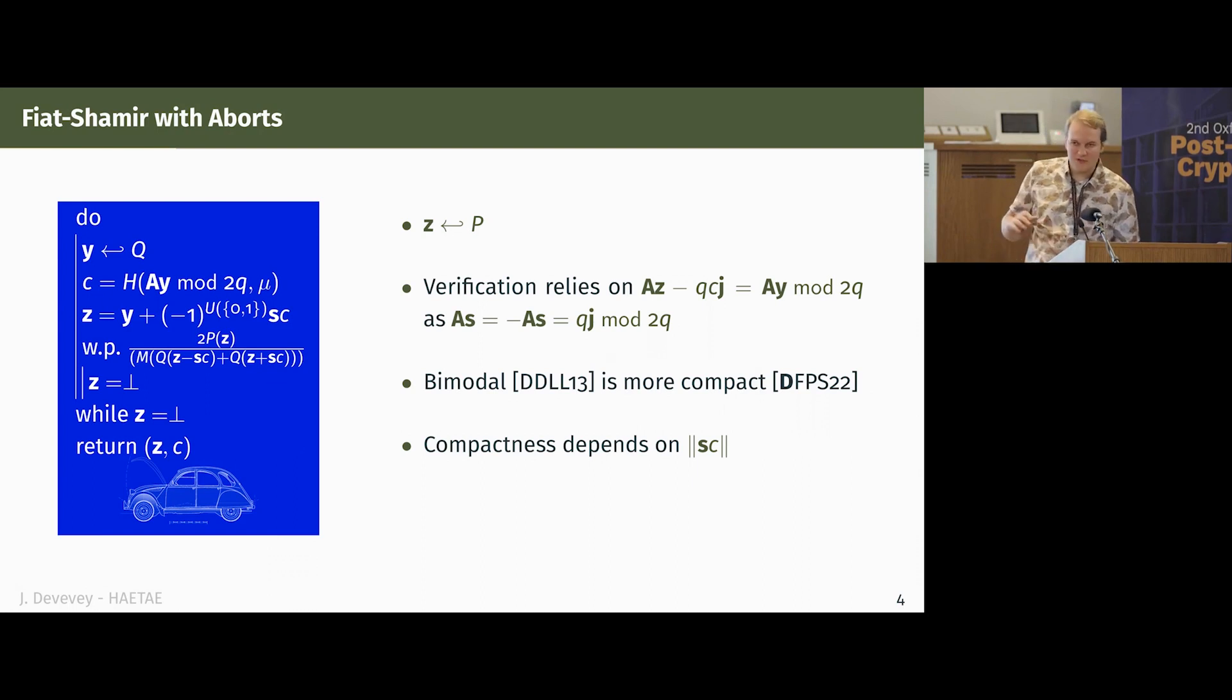So you have the following blueprint. You start by sampling a short vector y following some distribution q, which we will specify later. Using a public matrix A, you will hash it to get a challenge, and you will answer that challenge by computing a vector z, which is going to be y plus sc, where s is your short secret key, or y minus sc.